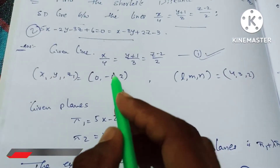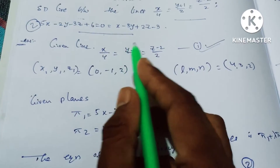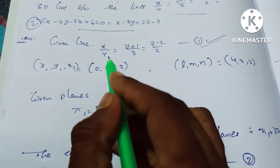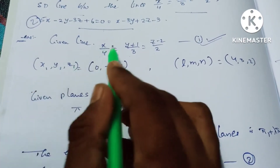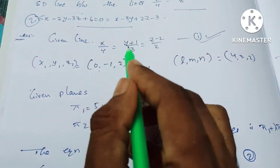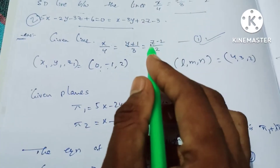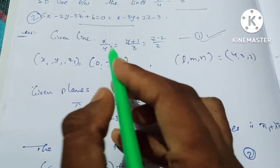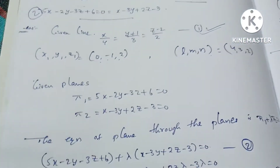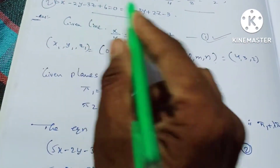The line equation is in the form x minus x1, y minus y1, z minus z1. Here, x minus x1 is 0, y minus y1 is plus 1, and z minus z1 is 2. Then we will show the plane equations.